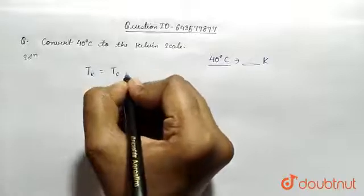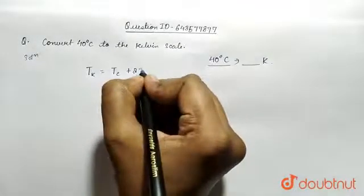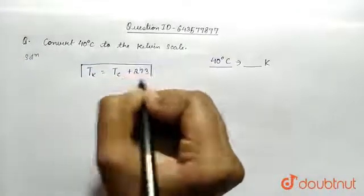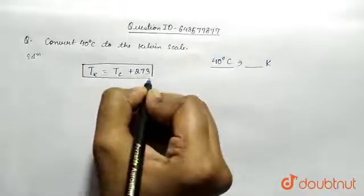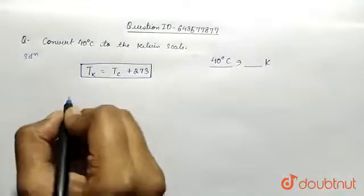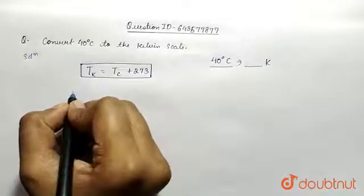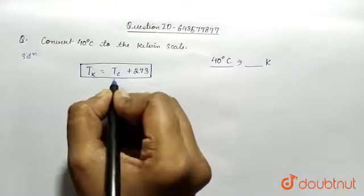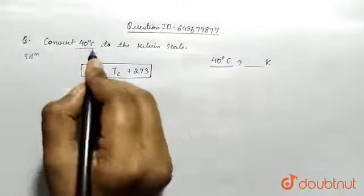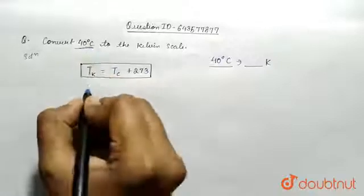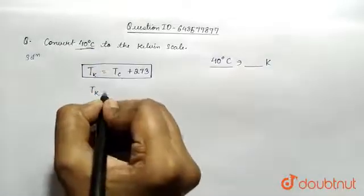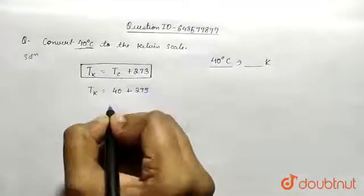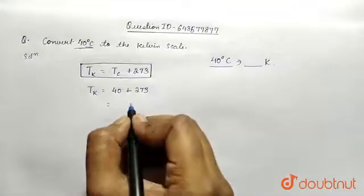equal to temperature in degrees Celsius plus 273. This is the relation you must remember to find the equivalent temperature from one scale to another. T in Kelvin is what we have to find, and T in degrees Celsius is given as 40 degrees Celsius. So in place of T_C we will write 40 and add 273 to it to get the equivalent Kelvin temperature.